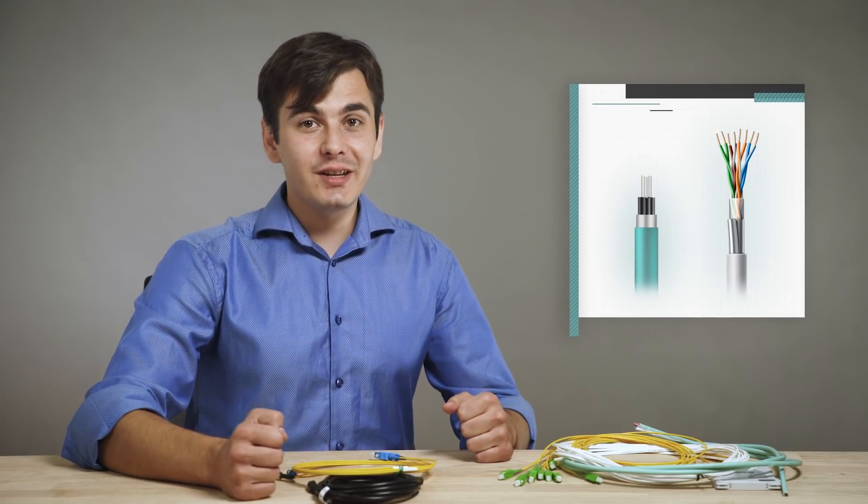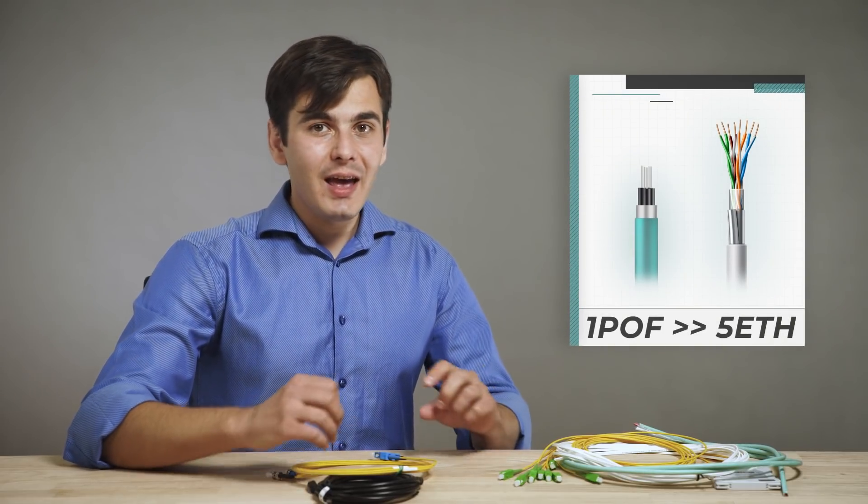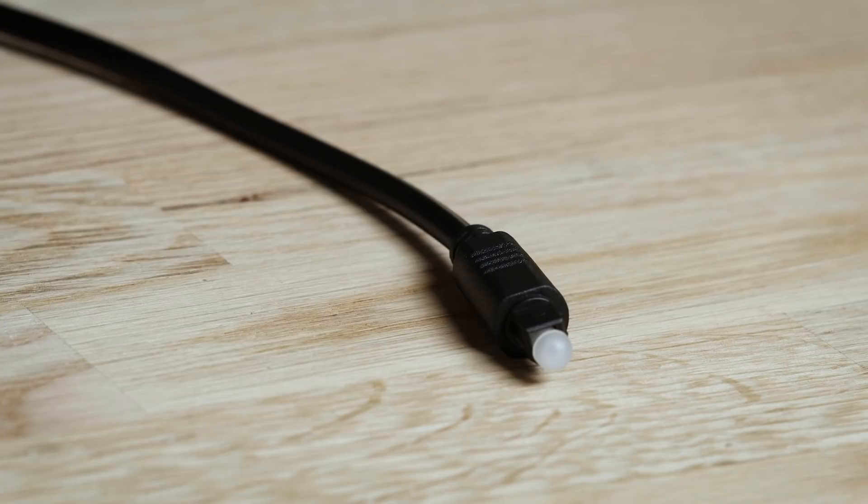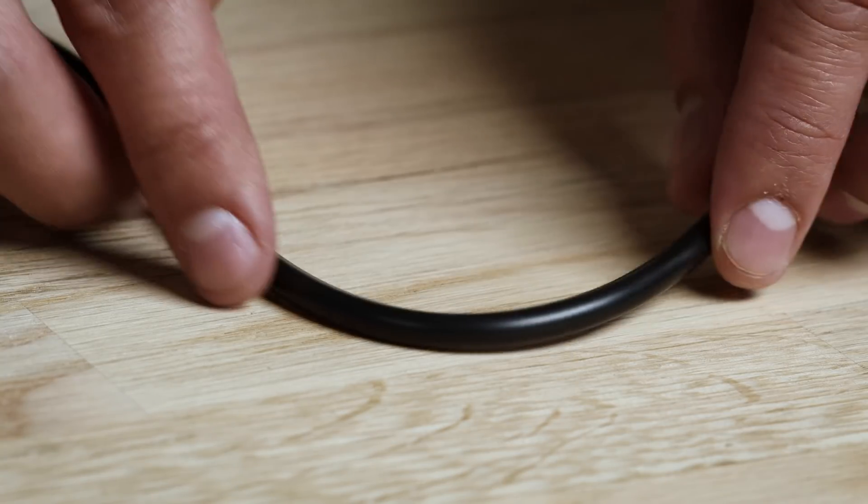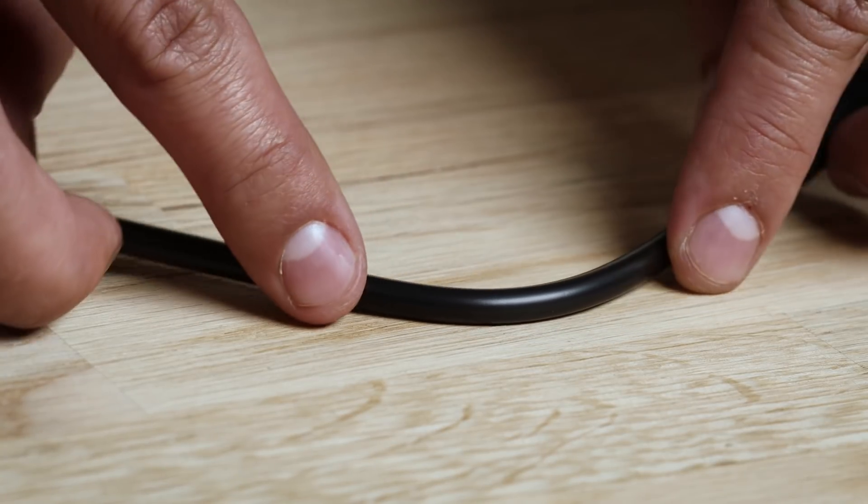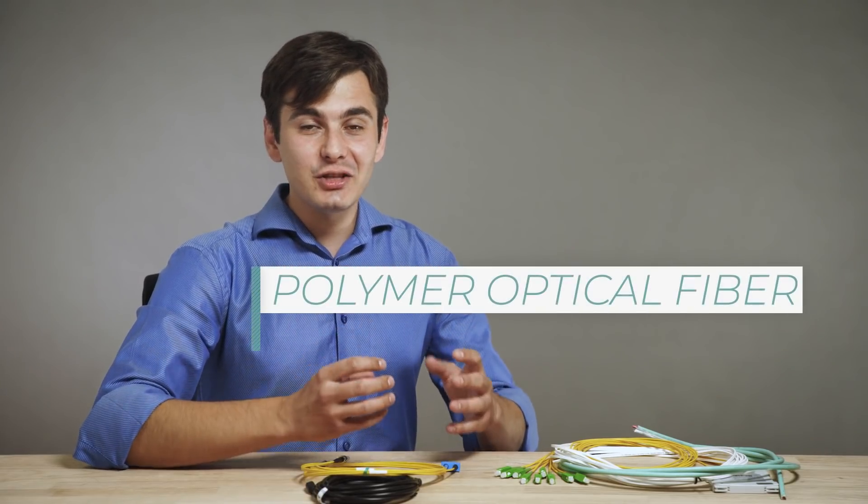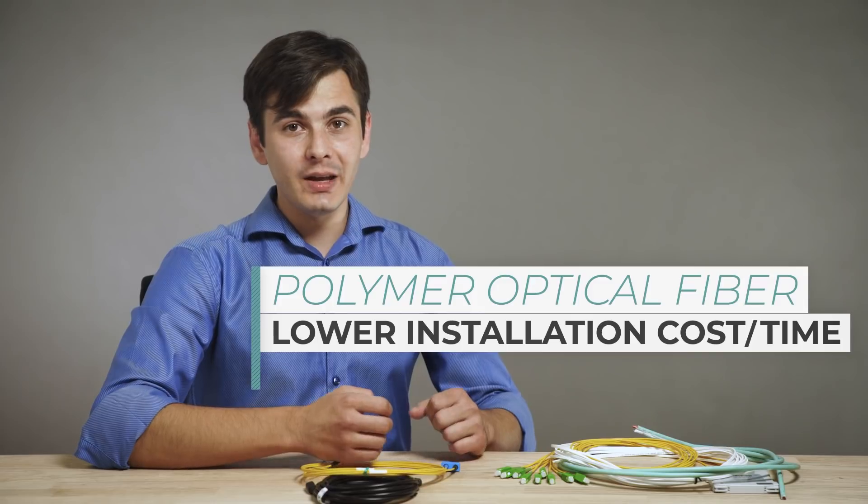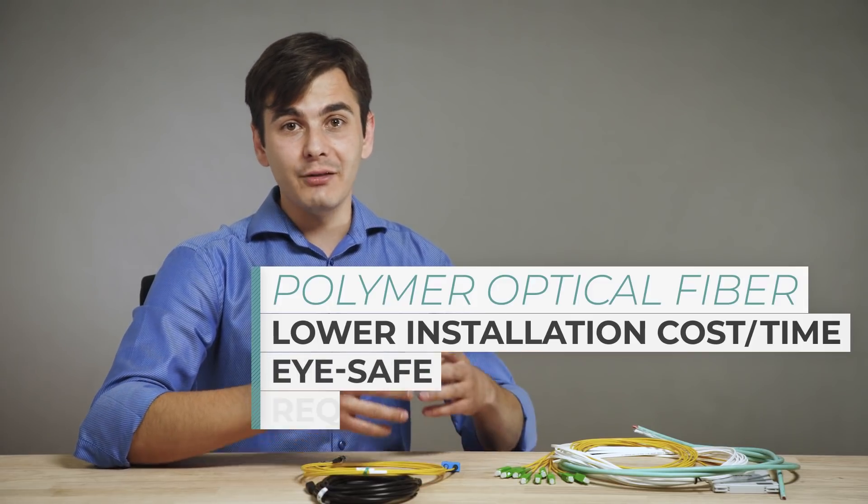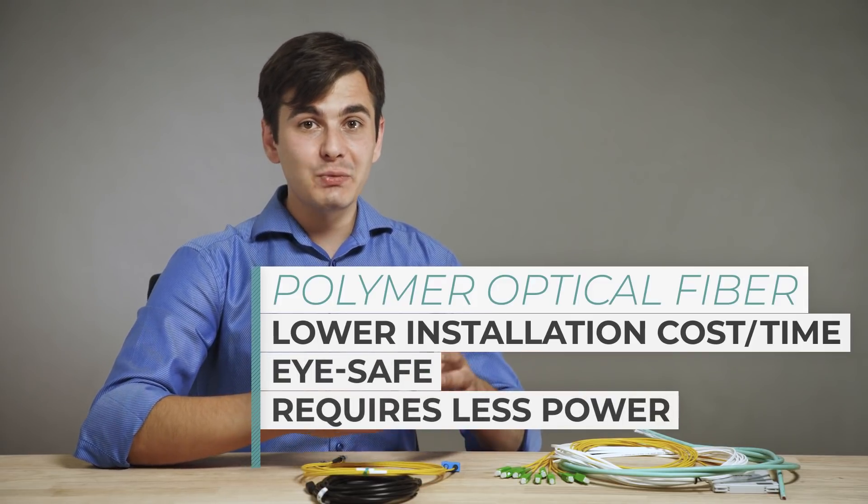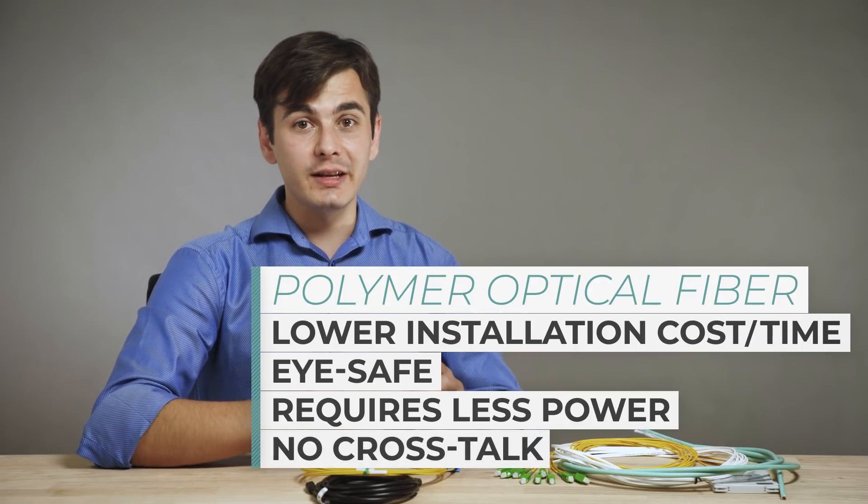The biggest advantage is cost. It can replace a few Ethernet cables category 6E with ease and because it's made of plastic, the cable itself is more rugged and can withstand tighter bend radius than glass optic fibers. Moreover, there is a cost advantage for actual installation time. It's an eye-safe equipment and requires less power, as well as no crosstalk if installed next to electric wires.